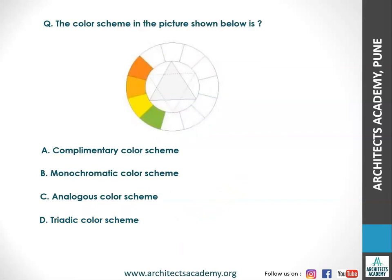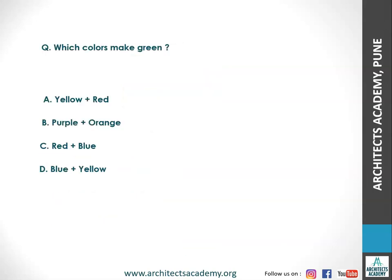Next, the color scheme in the picture shown — you can see all colors which are next to each other, and that is called an analogous color scheme. Then the next question: which colors make green? The simple answer is blue plus yellow. Green is a secondary color and blue and yellow are primary colors. When you mix two primary colors together, you get a secondary color.